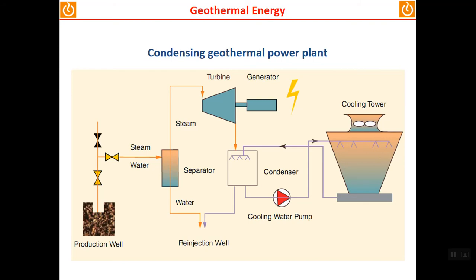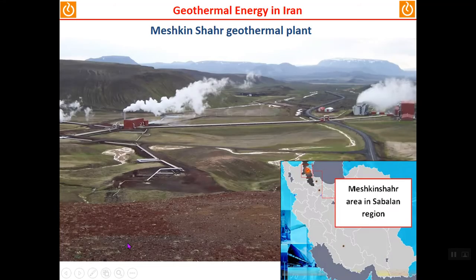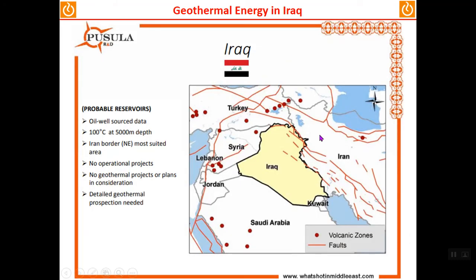The main challenge is using the energy within the earth efficiently. In Iran, there is just one geothermal plant in Meshkin Shahr, located in the northwestern part of Iran in the Savalan mountain region. This map shows the volcanic zones and faults, and there is a direct relationship between zones of volcanic stress and geothermal energy availability.